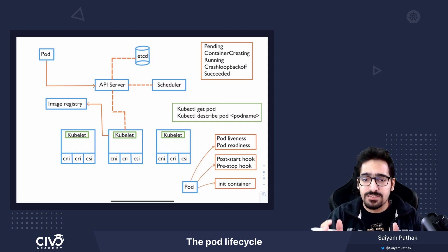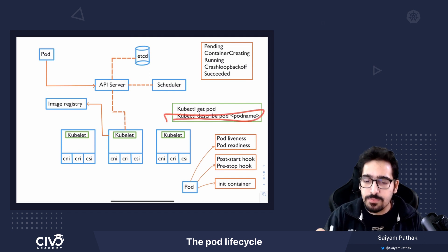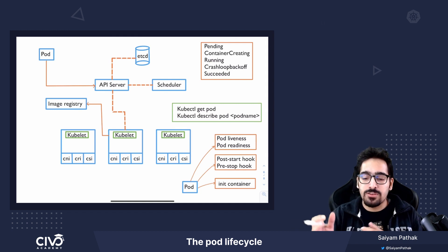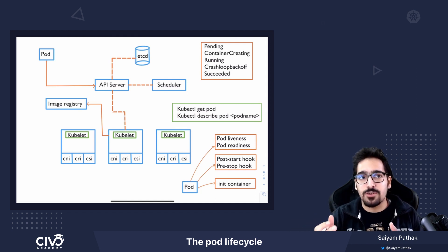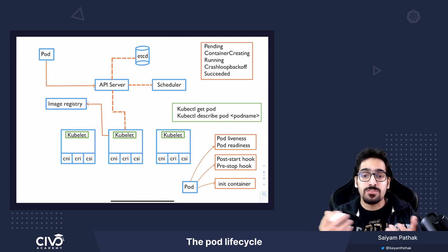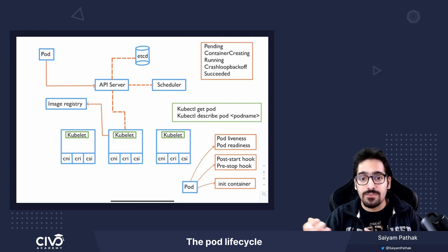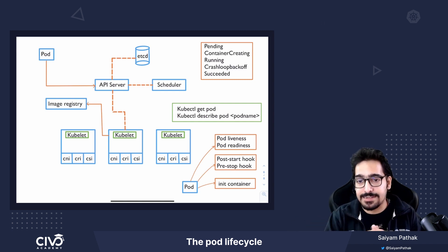If you want to find events of the pod, you can do kubectl describe pod <pod-name> to find specific events and what is actually happening. Sometimes a pod stays in the pending state for a long time — you might need to check whether resources are sufficient, whether you need to auto-scale, or whether you need to remove some pods from a node so that it goes to the container creating state.